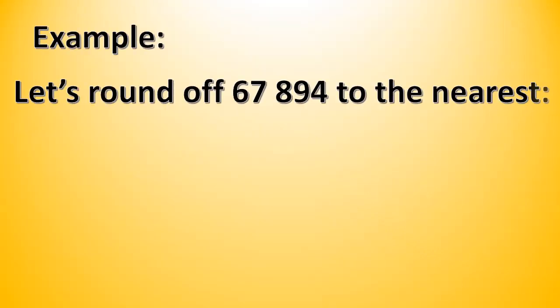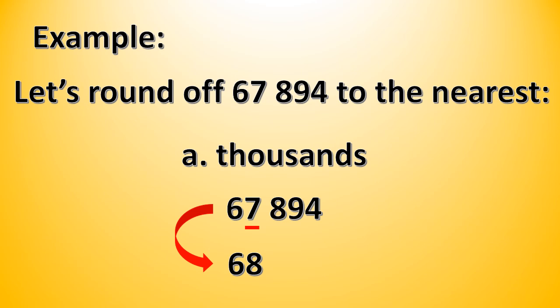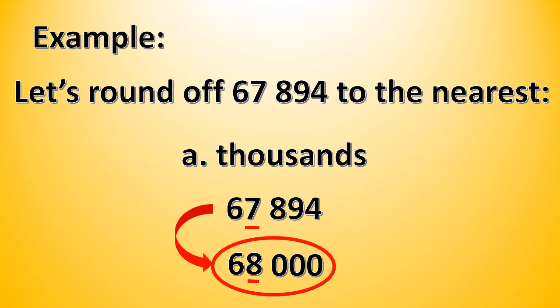For example, let's round off 67,894 to the nearest thousands. What is the digit in the place value to be rounded off? Very good, it is 7. And to its right is 8. Since the digit to the right is from 5 to 9, we round up. We add 1 to 7, so 67 will become 68, and all remaining digits will become 0. So 67,894 rounded off to the nearest thousands is 68,000.